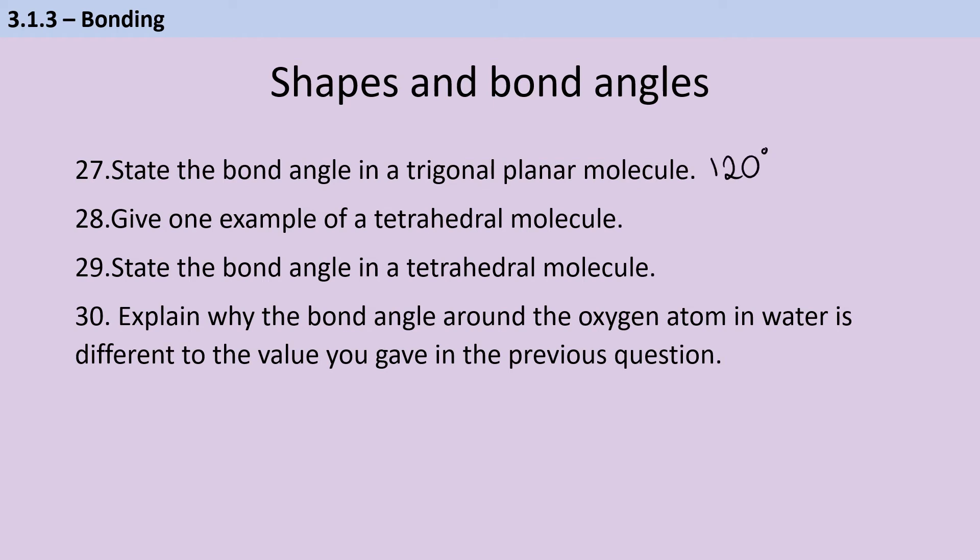There are lots of tetrahedral molecules you could name. Methane would be an obvious one, or you could also have a haloalkane. So something like chloromethane, but also, of course, the ammonium ion. In a purely tetrahedral molecule, we would have a bond angle of 109.5 degrees.